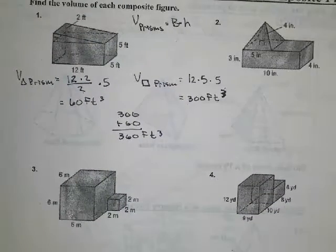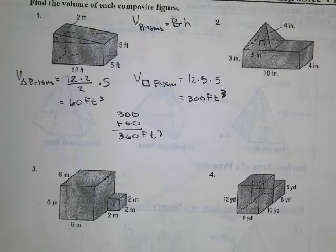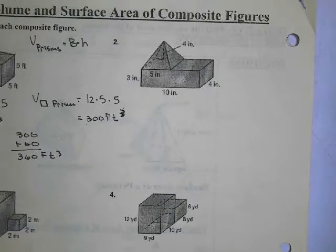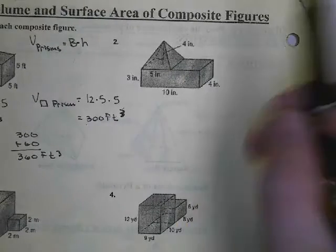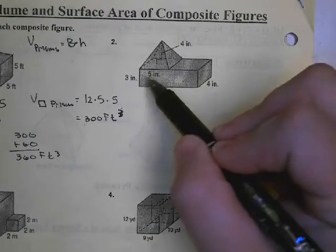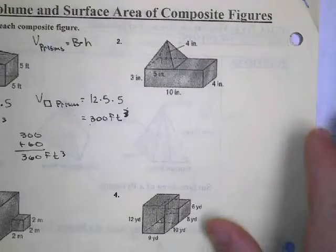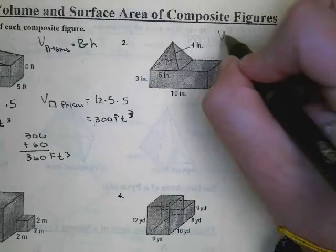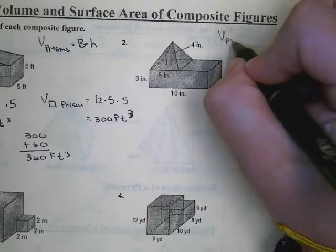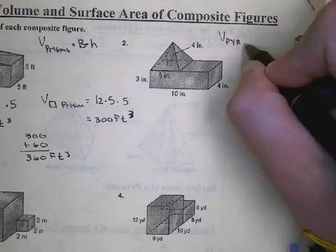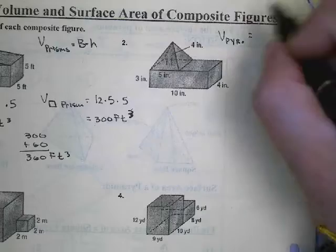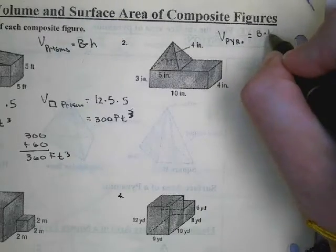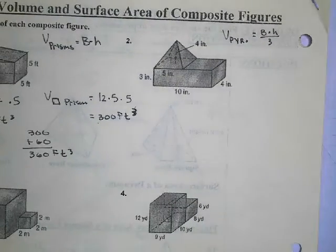The main idea is you just find the volume of each shape and add them together. So let's look at number 2. Now we have a pyramid resting on top of a box. We already know that the volume of prisms is base area times height. The volume of pyramids is also base area times height, but then we have to divide that by 3.